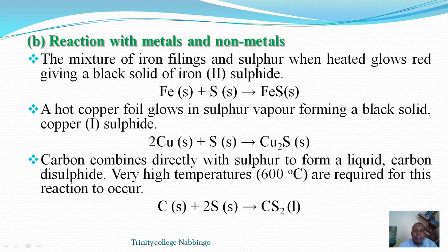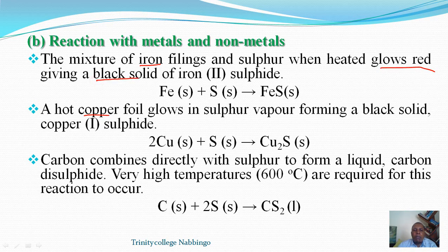The second reaction we are interested in is the reaction of sulfur with metals and non-metals. Sulfur reacts with metals such as iron and copper, as demonstrated in these reactions, to form sulfides. Iron reacts with sulfur to form iron(II) sulfide. This reaction is very interesting — when iron reacts with sulfur in a test tube, it glows red first. However, when we leave it to stand, the product slowly turns black, because we have formed iron(II) sulfide. For copper, the same thing happens — the solid formed is a black solid.